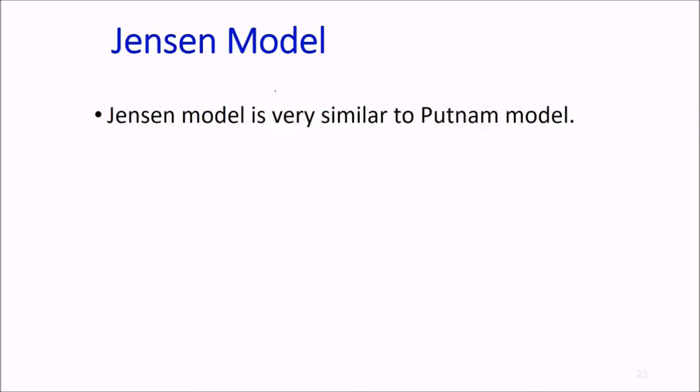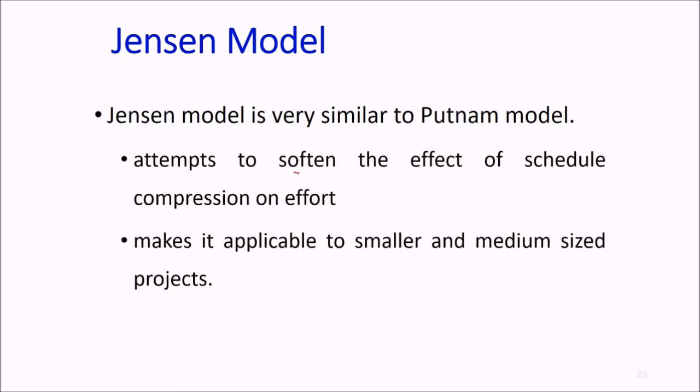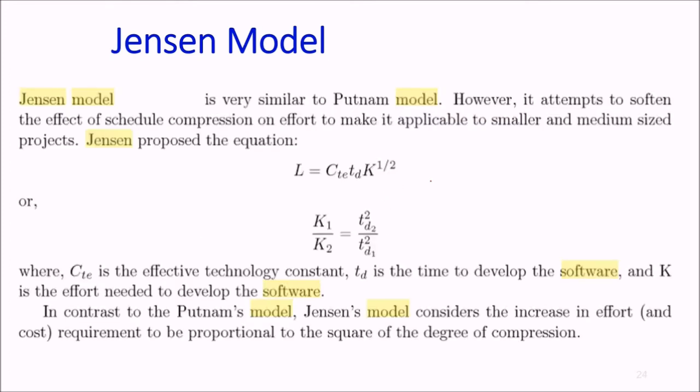The benefits can be gained by using fewer people over a somewhat longer time span. By the expression we presented, if estimated development time is 1 year, then to deliver the product in 6 months, TD becomes half year. So the total effort and cost increases by 16 times, 2^4 = 16. The relationship between effort and chronological delivery time becomes highly non-linear. Putnam model indicated extreme penalty for schedule compression and extreme reward for expanding schedule. Putnam estimation model works very good for very large systems but seriously overestimates effort for medium and small systems. Then came the Jensen model, which is very similar to Putnam model. It attempts to soften the effect of schedule compression on effort and makes it applicable to smaller and medium sized projects. Jensen proposed L = CTE * TD^(1/2), where CTE is the effective technology constant. In contrast to Putnam model, Jensen model considers the increase in effort and cost to be proportional to the square of degree of compression, not to the power of 4.